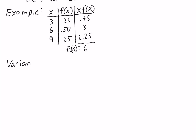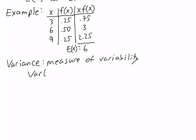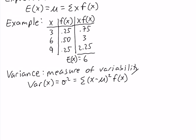The variance of a discrete random variable is a measure of variability, just as the variance is a measure of variability for data. The variance can be written as Var, or it can be written as sigma squared. The formula is the sum of x minus mu, squared, times f of x. To compute the variance, we can add some columns to our probability distribution.